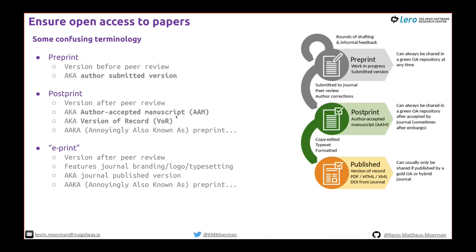There's also e-print — the version after peer review that might feature the journal branding, logo, and typesetting. With publishers like Elsevier, you often cannot share this version unless it's an open access article you paid for. This is also known as the journal published version, and again sometimes confusingly called a preprint. So preprint is the most fuzzy term — just wanted to clear those things up.